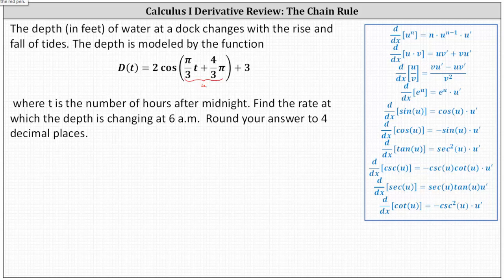Because we have a composite function, we know we have to apply the chain rule, where u, the inner function, is equal to pi divided by three times t plus four-thirds pi.